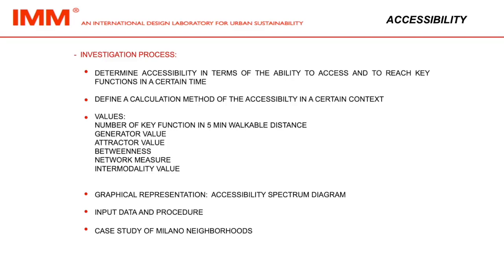Define a calculation method of the accessibility in a certain context. Values include: number of key functions in 5 minutes walkable distance, generator value, attractor value, betweenness, network measure, intermodality value, graphical representation, accessibility spectrum diagram, input data and procedure, and a case study of Milano neighborhoods.